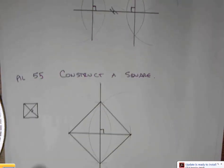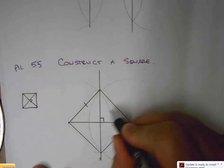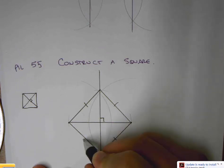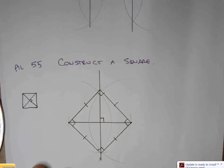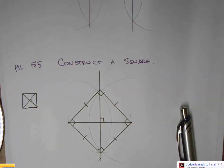And to notate this as a square, we should put in the marks and signify it is a square. It's got four congruent sides and four right angles. That's what makes it a square. And that concludes constructing a square.